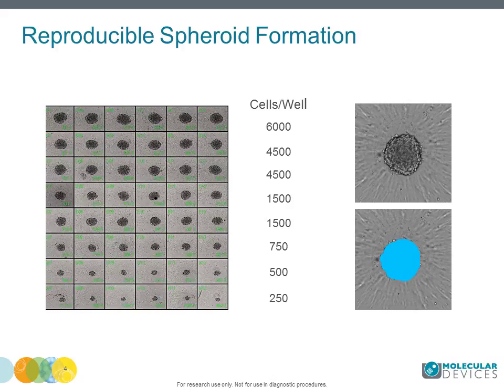You can modulate the size of spheroids by changing the number of plated cells. Typically, approximately 1,000 cells per well are used. Variation in spheroid size is usually less than 10%. Imaging of spheroids can be done with an automated imaging system, like the ImageXpress Micro confocal system. Plating and media additions are similar to regular cell culture.